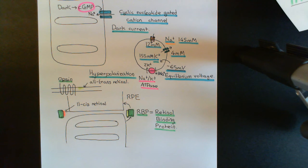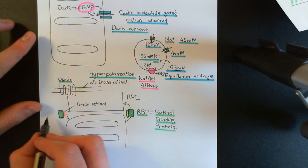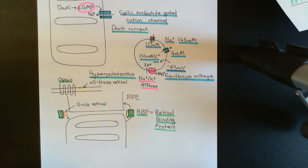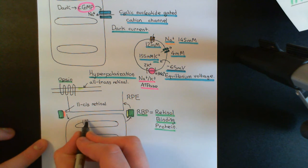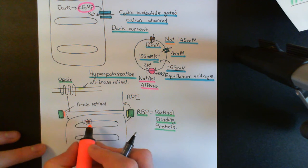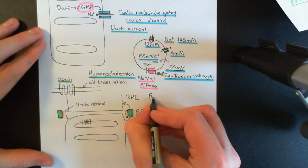The retinal pigment epithelium will return it to 11-cis-retinal and send it back to the rod photoreceptor. The protein that transports it between the rod and the retinal pigment epithelium is the retinal binding protein. Once the 11-cis-retinal is back at the rod, it will rebind with the opsin G-protein-coupled receptors in the disc membrane, and you'll get rhodopsin receptors reforged. This cycle is known as the retinal pigment regeneration cycle.